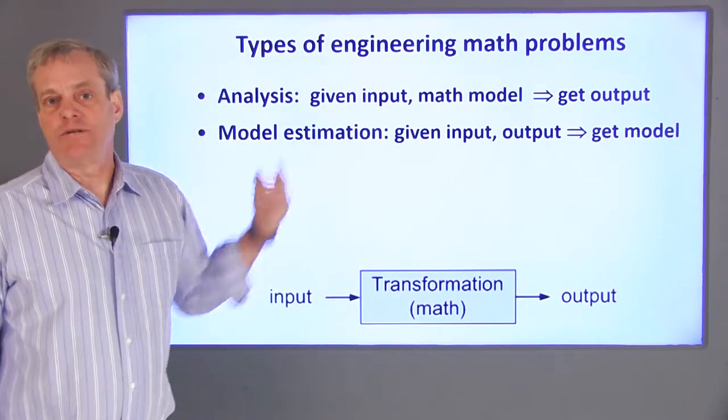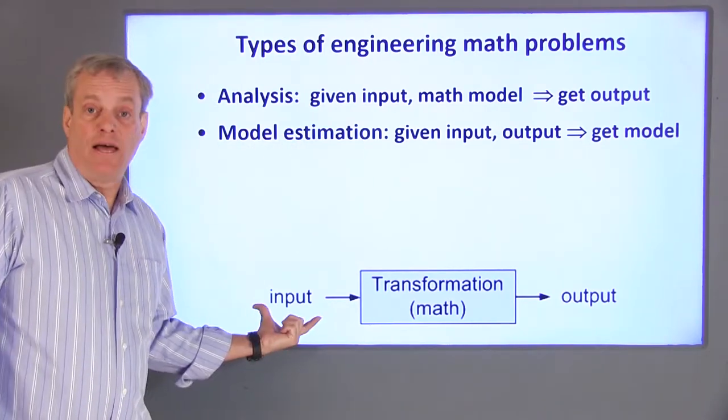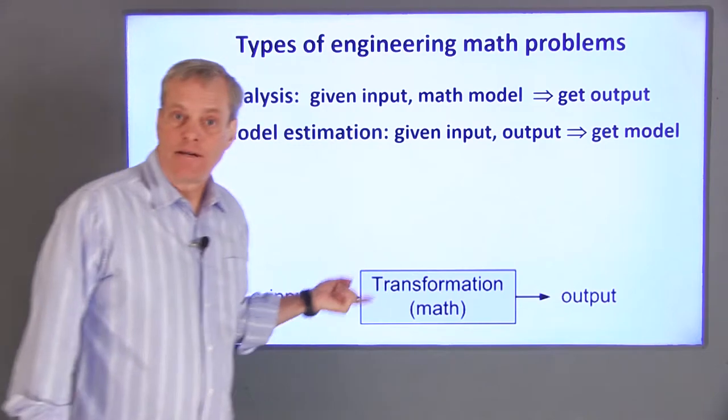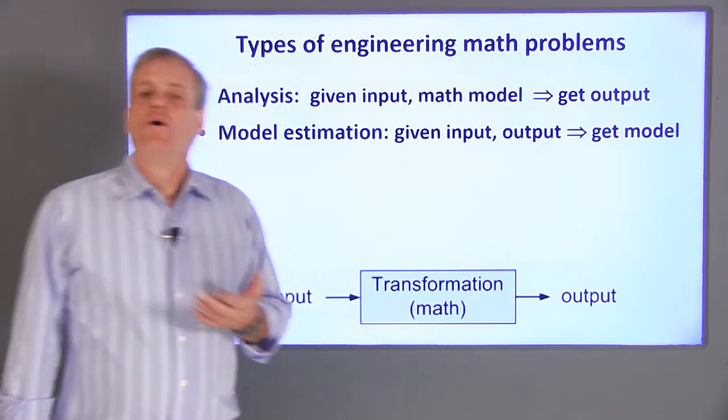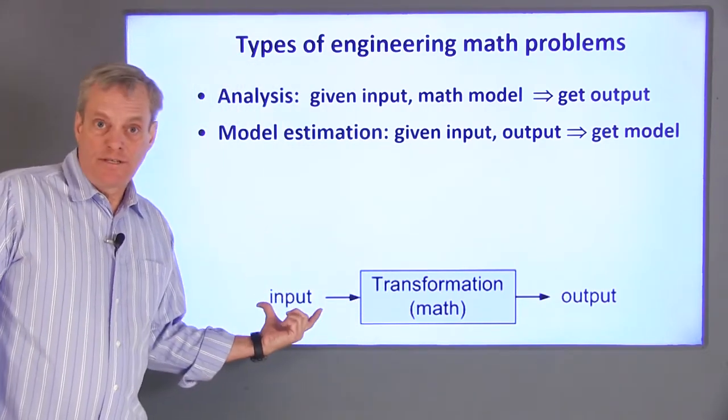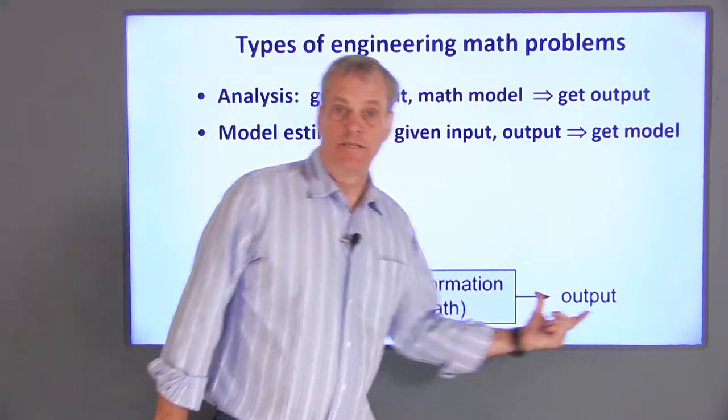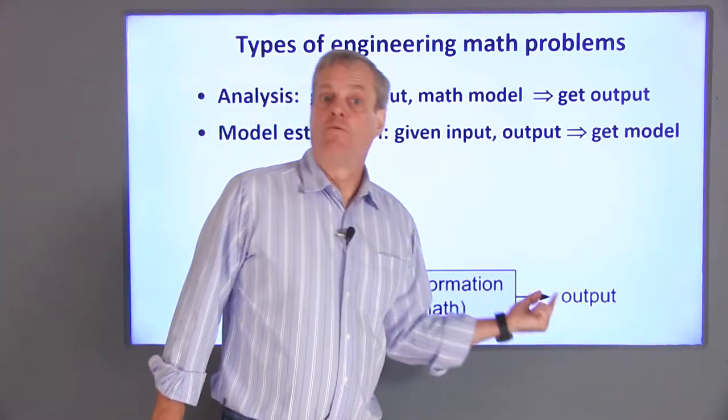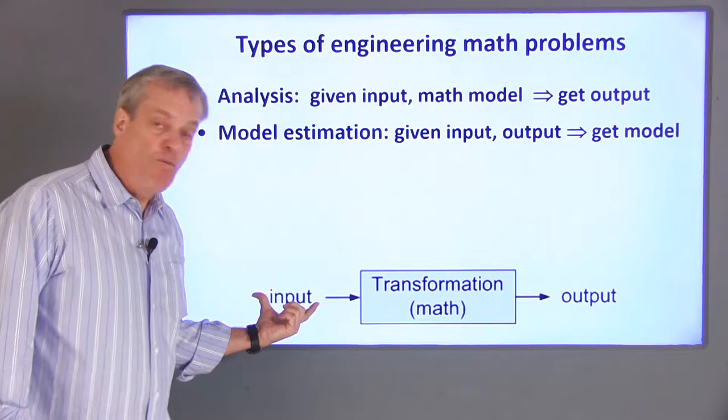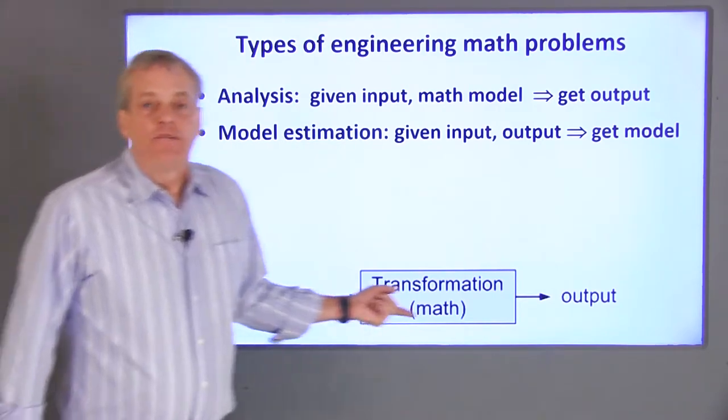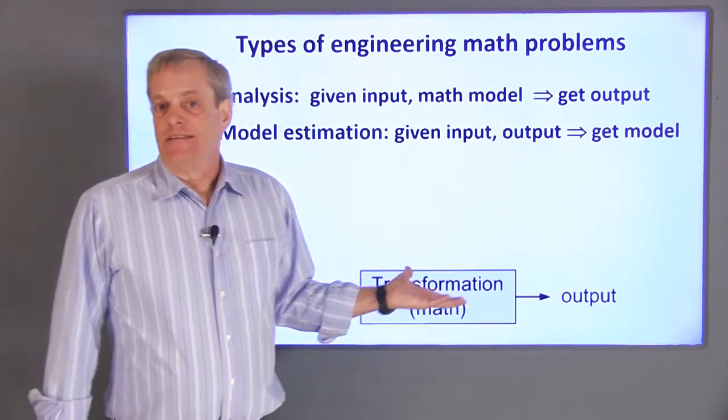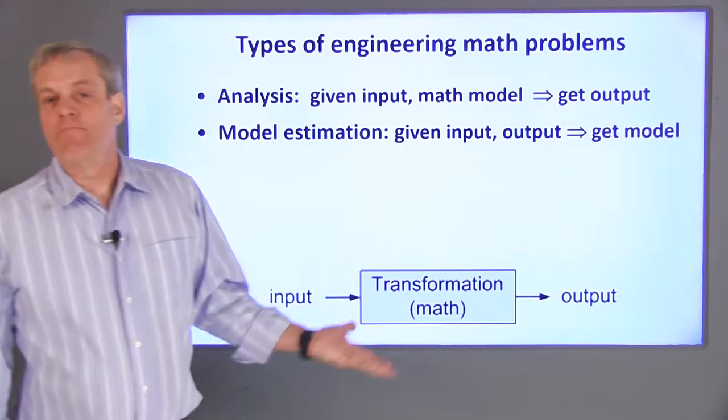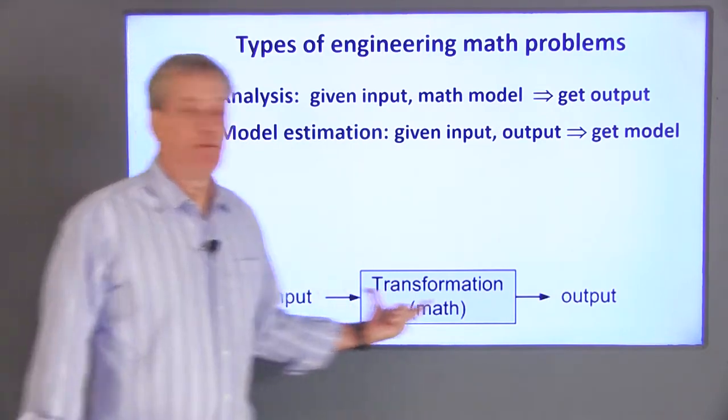Another option is model estimation. In this process, we apply some input to the system, measure the output, and use the data to estimate a mathematical model for the system. We did this for our spring example by applying a few different weights to the spring, measuring the corresponding displacements, and then we created an approximate relationship between the input and the output, which we can use to estimate the displacement for any weight that we hang off the spring. This requires a broader mathematical insight than analysis, in that we need to be able to choose among a variety of mathematical models to find one that best replicates the relationship between the input and the output.